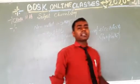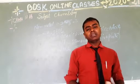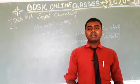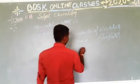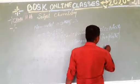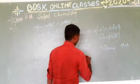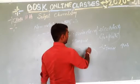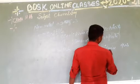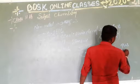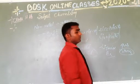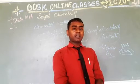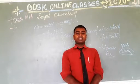Non-metals are present in all three states. As you know, metals are present in only one state — that is solid state, except mercury. Non-metals are present in solid, liquid, and gas states. For example, carbon, sulfur, and phosphorus belong to solid state. Bromine is liquid. And hydrogen, oxygen, and chlorine belong to gaseous state. All these elements are non-metals, so you can say that non-metals are present in all three states.